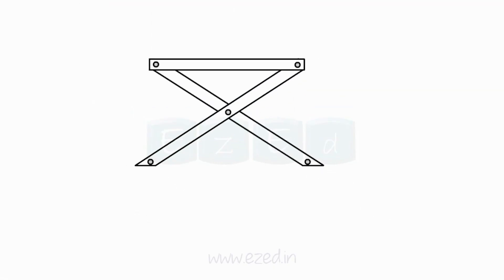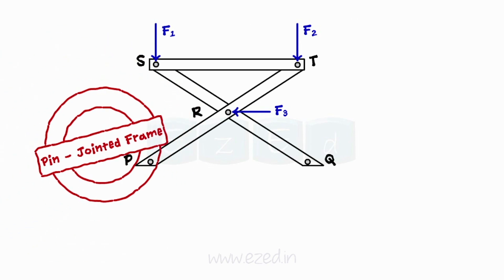When a number of bars or members are pinned together in such a way that one or more than one of its members are subjected to a number of forces, such a structure is called a pin-jointed frame.